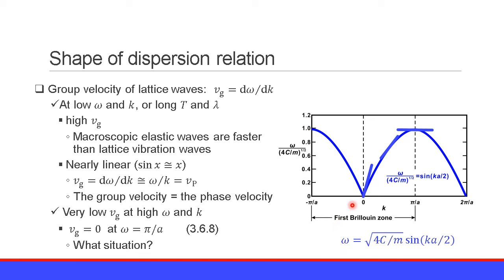At low wave number or low frequency, the dispersion relation is nearly linear, so the group velocity nearly equals the phase velocity v_p, since dω/dk is approximately ω/k. In contrast, at very high ω or high k, the group velocity is very low, and at k equals π/a the group velocity is zero, equation 3.6.8.